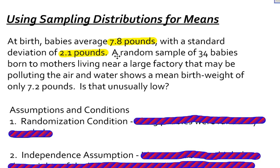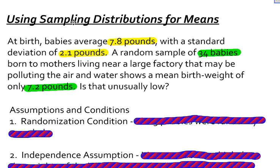Now, it goes on to say that we want to collect a random sample — a random sample of 34 babies born to mothers living near a large factory that may be polluting the air and water — and it shows a mean birth weight of only 7.2 pounds. Is that unusually low? This 7.2 pounds comes from a sample, and the sample size is 34 babies. We are going to use a sampling distribution to see if 7.2 pounds is unusual for a random sample of 34 babies.